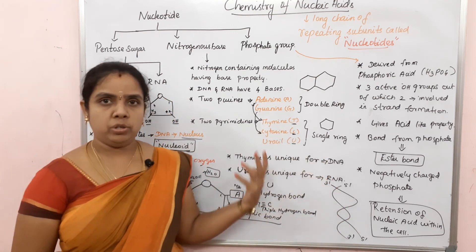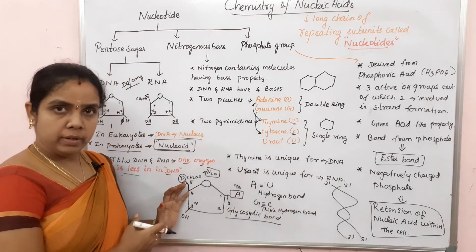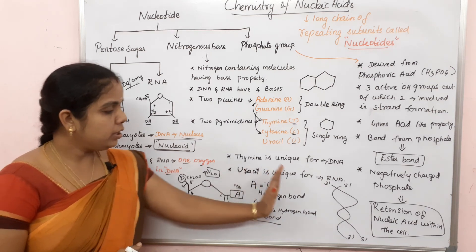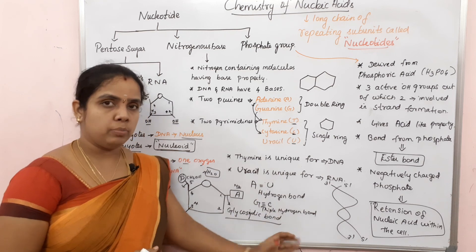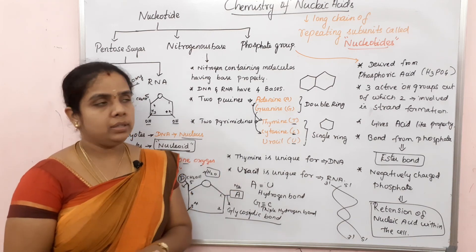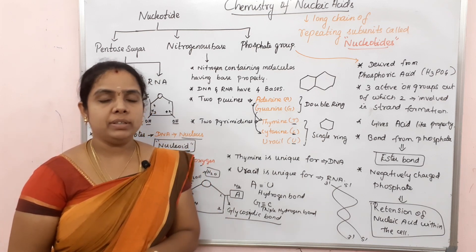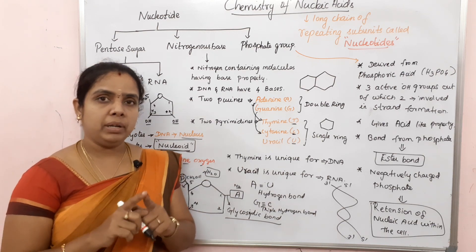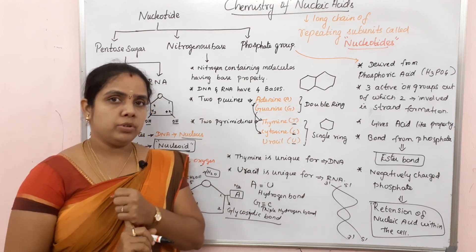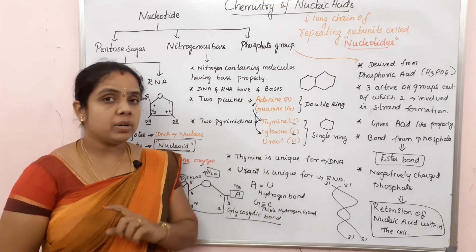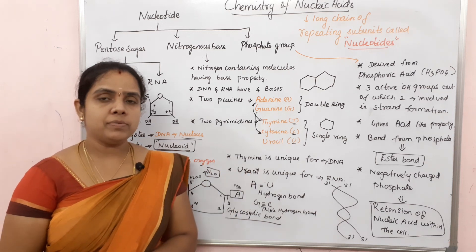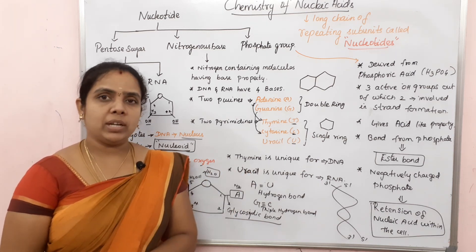This is Part 1. In the next video, we will see how the chemical structure is formed and how the DNA chain is formed. To summarize: a nucleotide has a phosphate group, a nitrogenous base, and a pentosugar. I hope this video is useful. Please share our videos with your friends and subscribe to our channel. Thank you.